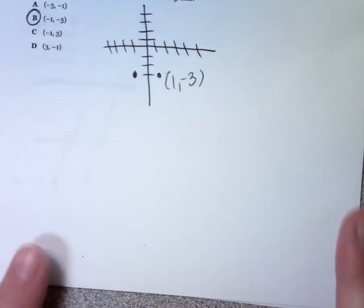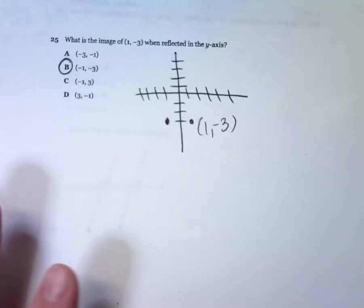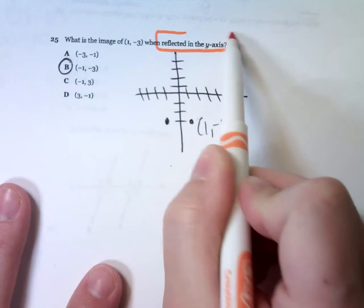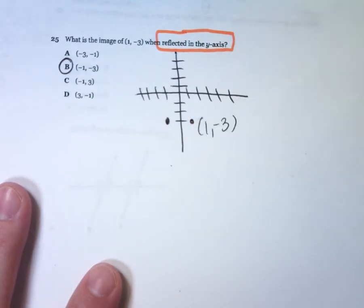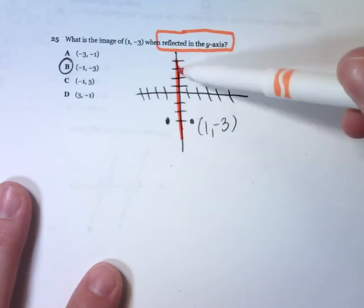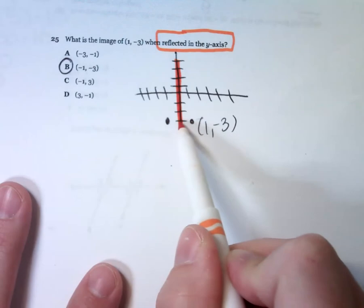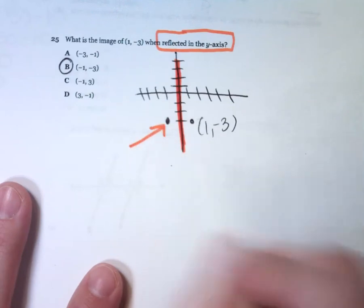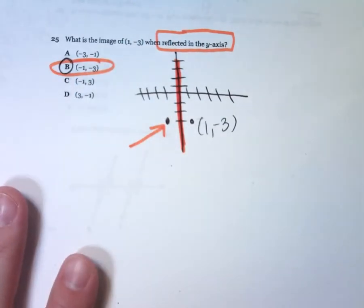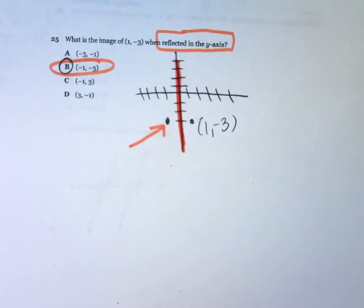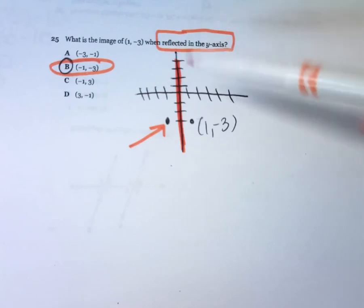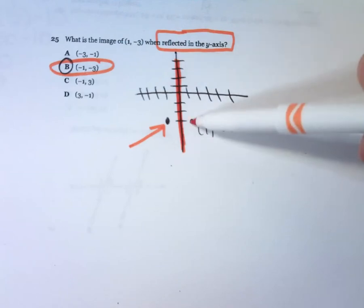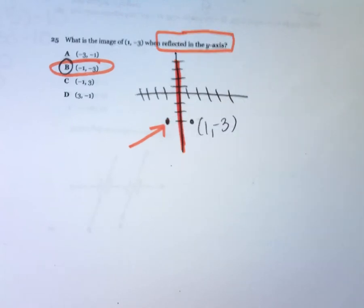Number 25. I could have followed a rule, but I decided to just draw a picture. If I want to take the point 1, negative 3 and reflect it in the y-axis, I go once to the left to reach the y-axis, so I need to go once more to the left to get to its reflection point. That gives me the ordered pair negative 1, negative 3. It's just as easy to draw a picture, count how far it is from the axis, and make that move again.